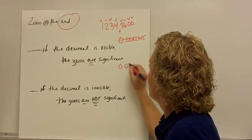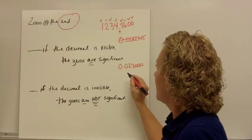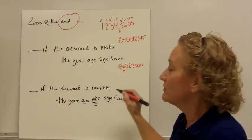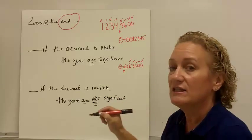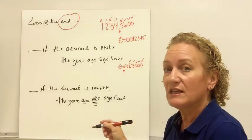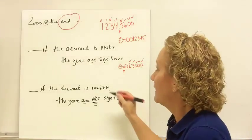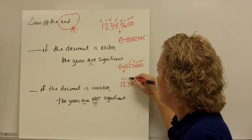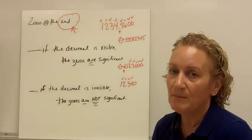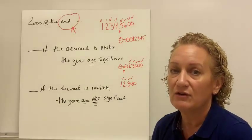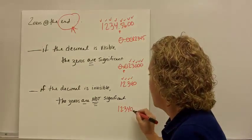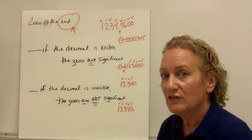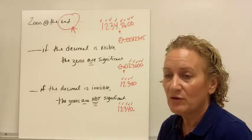If I have this number, let's look at it: zeros at the beginning of a number are never significant; zeros at the end of a number are sometimes significant. Is my decimal showing? Yes, it is — that tells me those zeros at the end are significant. So, I have 5 significant figures. The last rule is really easy: if the decimal is invisible, those end zeros are not significant. So, if I have 12340 with no decimal, that has 4 significant figures — the decimal is there, but it's invisible. However, if we take that same number and add a decimal to the end — 12340. — now that zero is significant, and we have 5 significant figures. It's really important to follow the rules in order; don't follow them in order and you won't get the problems right.